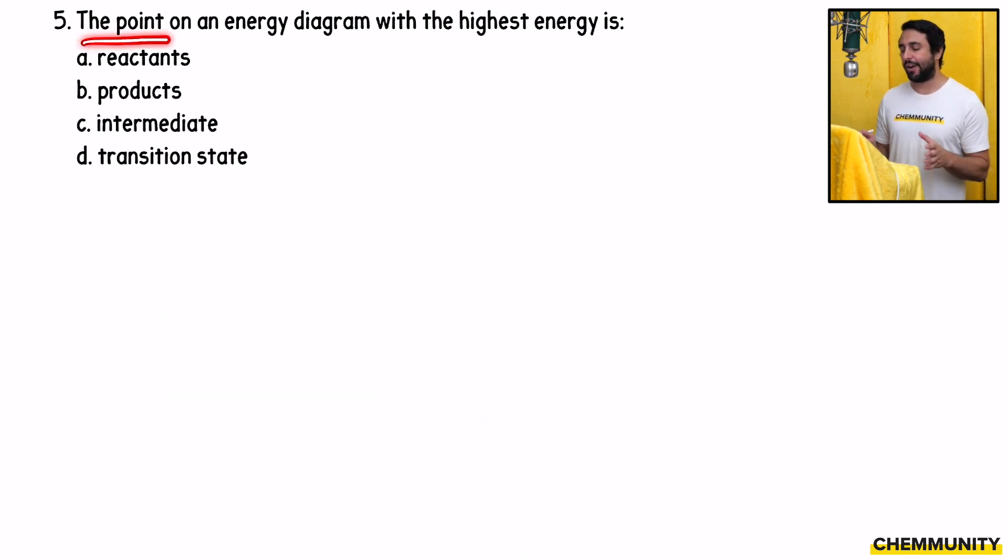Five asks, the point on an energy diagram with the highest energy is reactants, products, intermediate, or transition state.